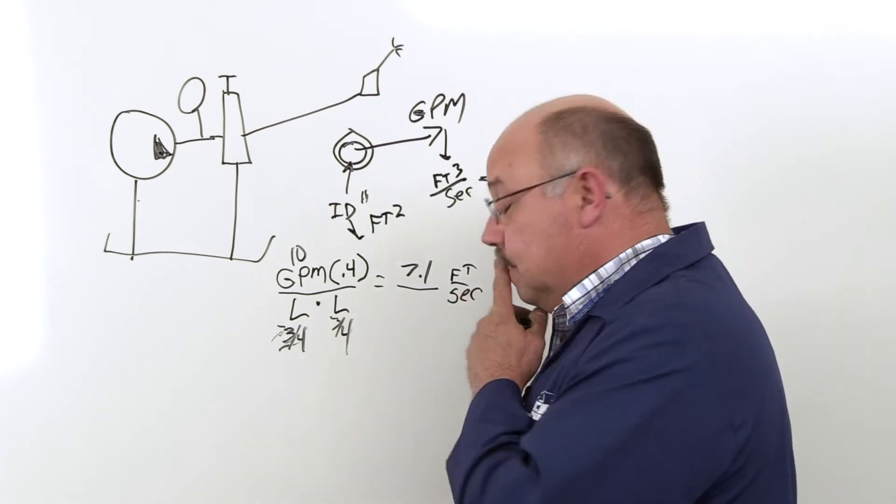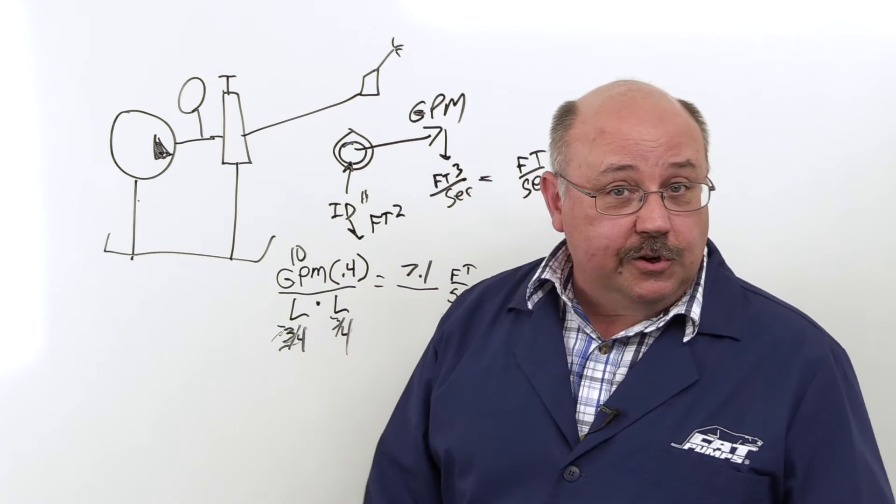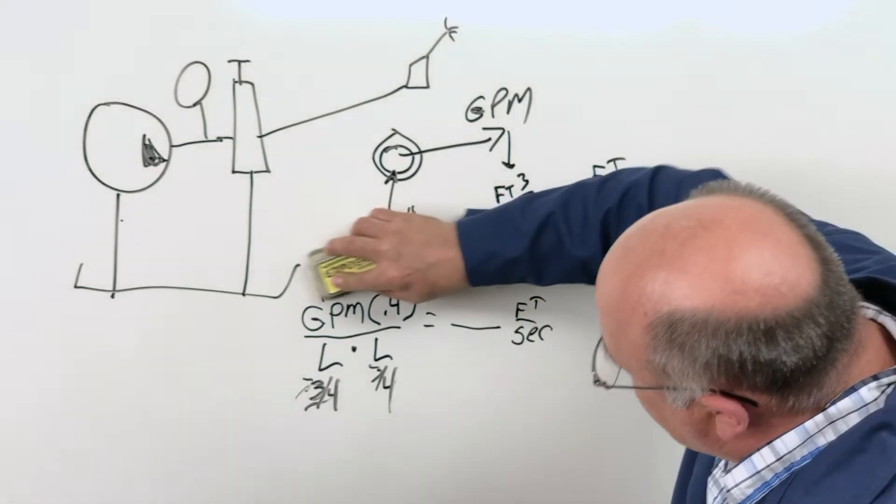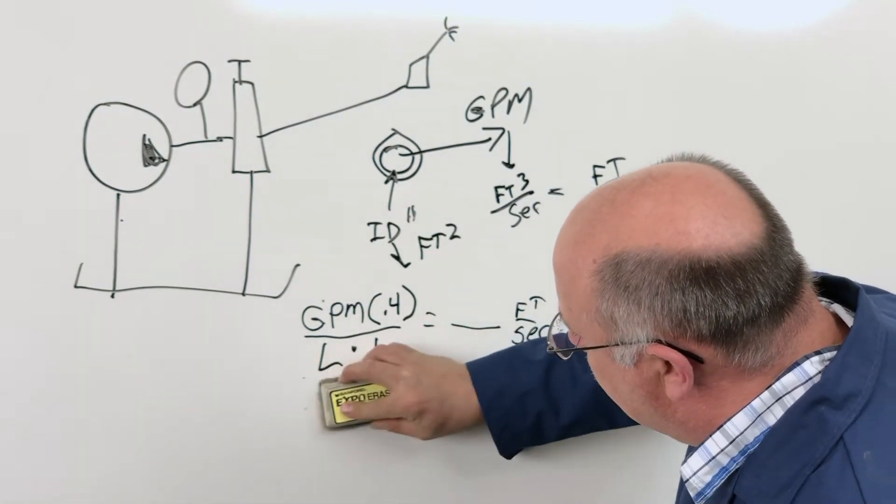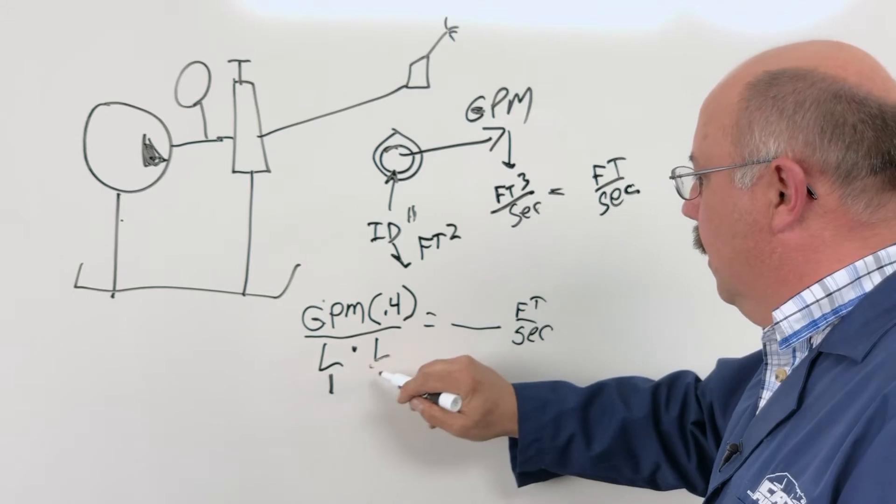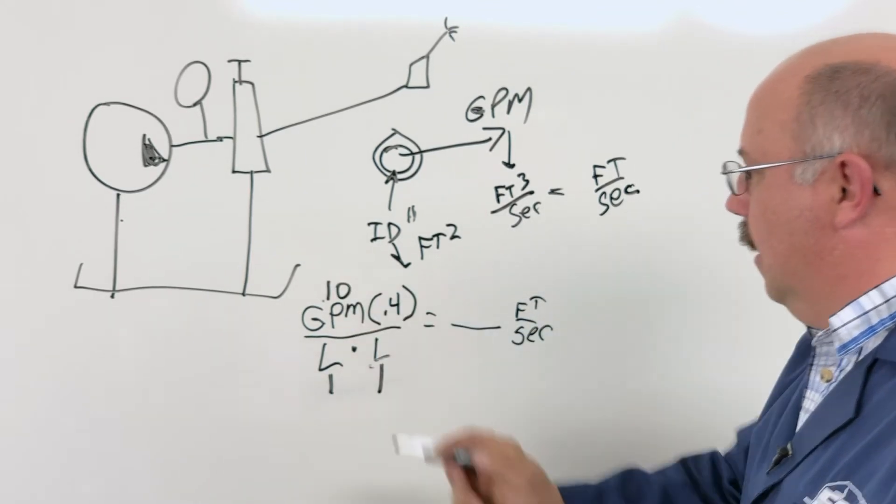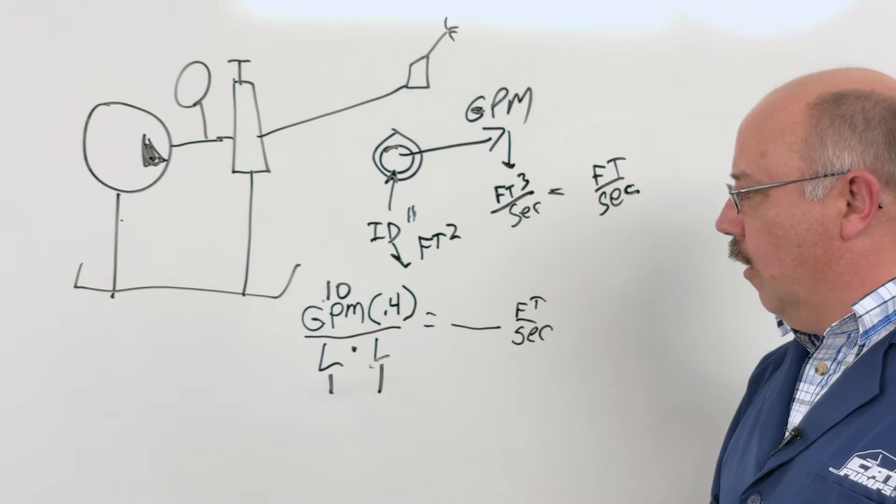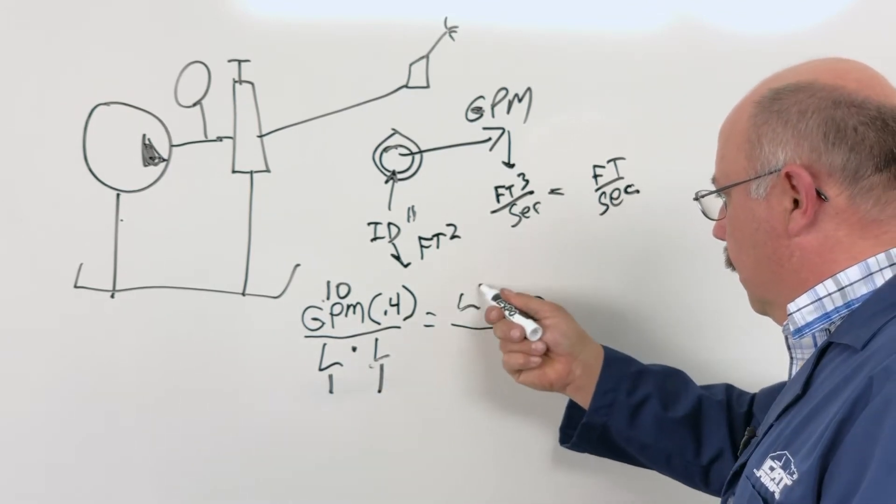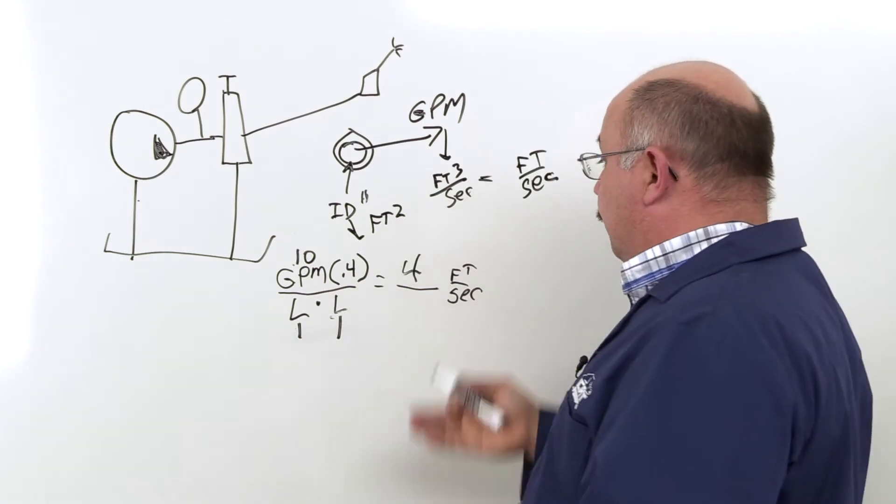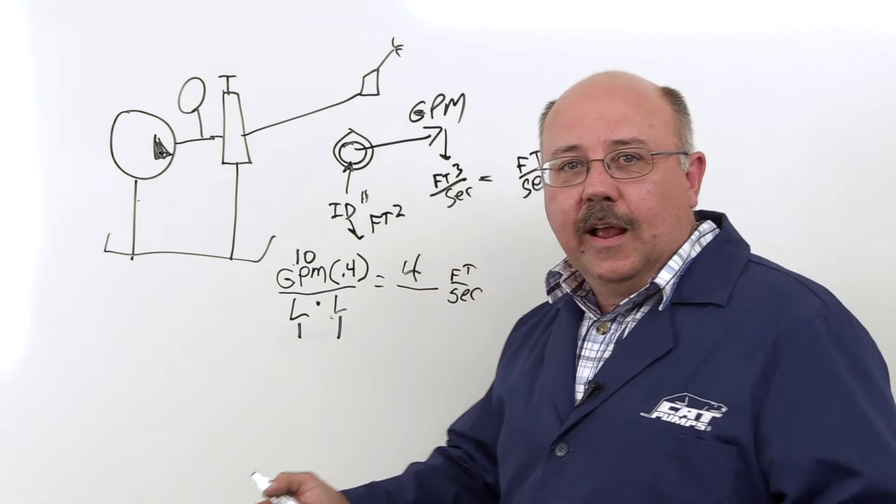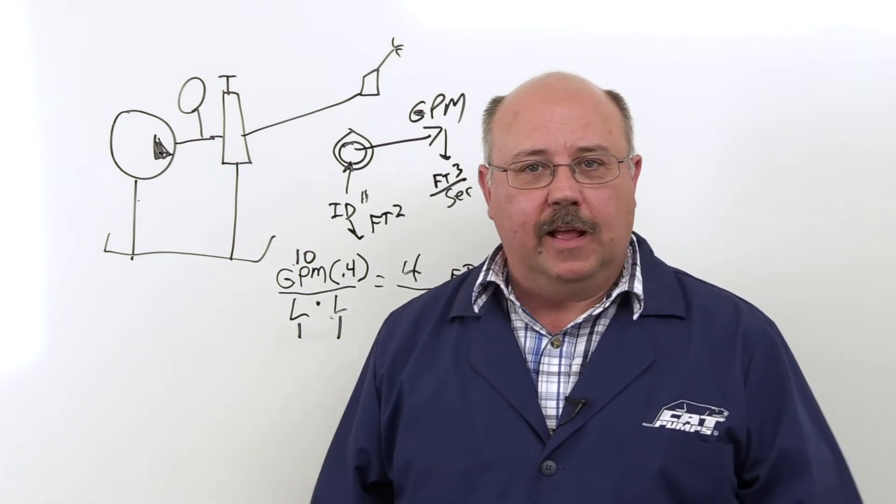So now we've got to think. Let's go with a larger line. That should slow the velocity down. So we'll delete that, delete that. Put different numbers in here and get a one-inch, a one-inch, still at 10 gallons. Well, 10 times 0.4 is four, divided by one is four. We've just found our line size, four feet per second, 10 gallons a minute, one-inch line. We're right at the velocity we need to be.